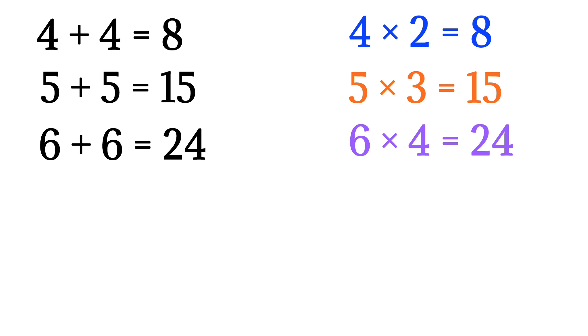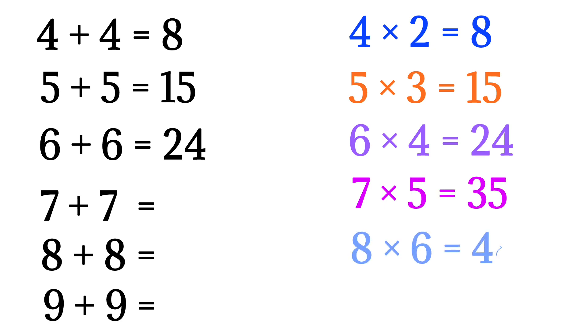Now, we have to find the value of 9 plus 9 so for that we apply the same pattern to 7 plus 7 and 8 plus 8. For this we multiply 7 by 5 we get 35. Then multiply 8 by 6 we get 48. And multiply 9 by 7 we get 63. So 63 is the correct answer.